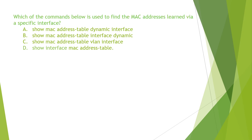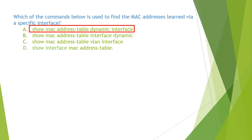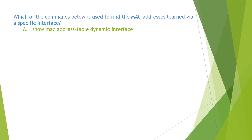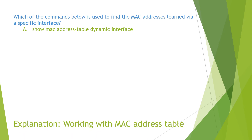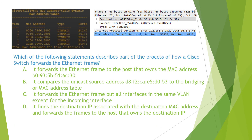The question reads: which of the commands below is used to find the MAC addresses learned via a specific interface? The command is 'show mac address-table dynamic interface'. Therefore the answer is A. You can find the detailed explanation in the video 'Working with MAC Address Table.'